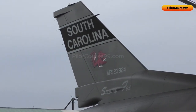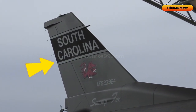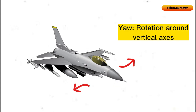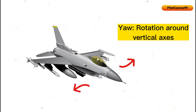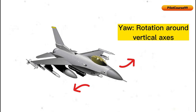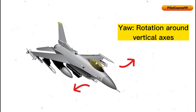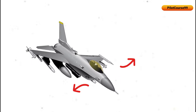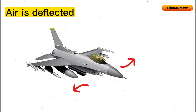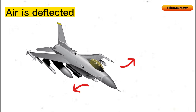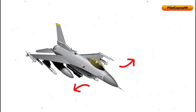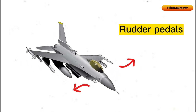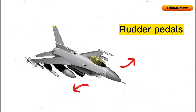One of the controlling surfaces is the rudder, which is located on the vertical tail fin of the fighter jet. It is used to control the yaw of the aircraft — the rotation of the aircraft around its vertical axis. Air flowing over the vertical tail fin is deflected, generating a force that causes the jet to rotate around its vertical axis. By deflecting the rudder to one side or the other through foot pedals, a pilot can control the yaw of the aircraft and change the direction of flight.